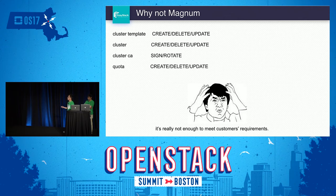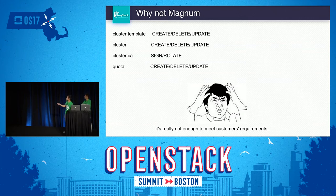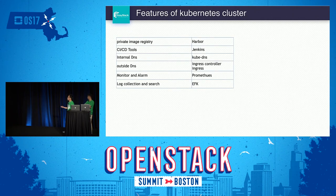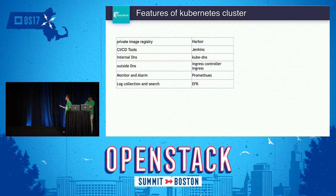Why not Magnum? Magnum can help deploy Kubernetes clusters, but it's not enough to meet production requirements. Magnum's functions include cluster templates, management, create, delete, update, cluster certificates, and quota — that's all. A real production-ready container platform needs more: private image registry, CI/CD tools, internal DNS, external DNS, monitoring and alarms, and log collection and search. We use appropriate software to implement all these features.